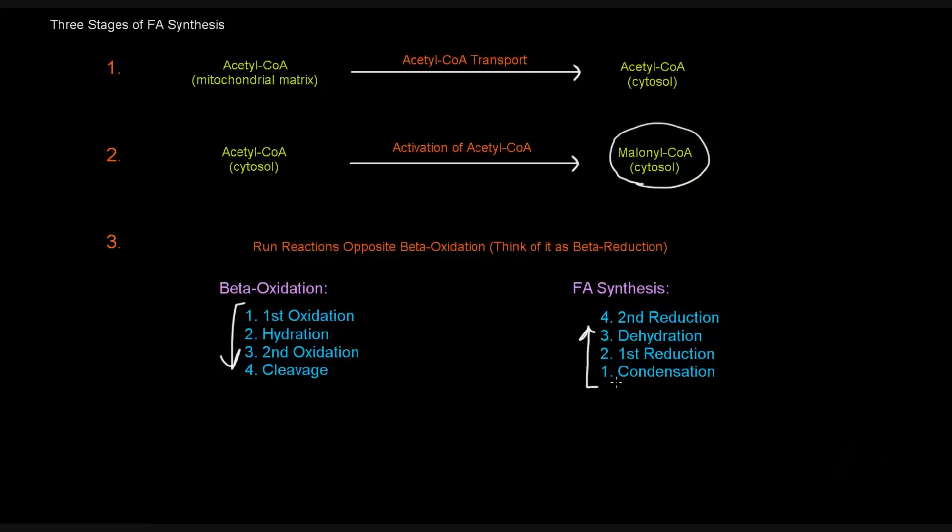Fatty acid synthesis is also four steps, and those four steps counteract and are pretty much opposite beta-oxidation. The first step of fatty acid synthesis is a condensation reaction, which links two carbon atoms together, forming a carbon-carbon bond—the opposite of cleavage. After that condensation, there's the first reduction, opposite the second oxidation from beta-oxidation. The third step is a dehydration, opposite the hydration step. And the final step is the second reduction, which is opposite the first oxidation in beta-oxidation.